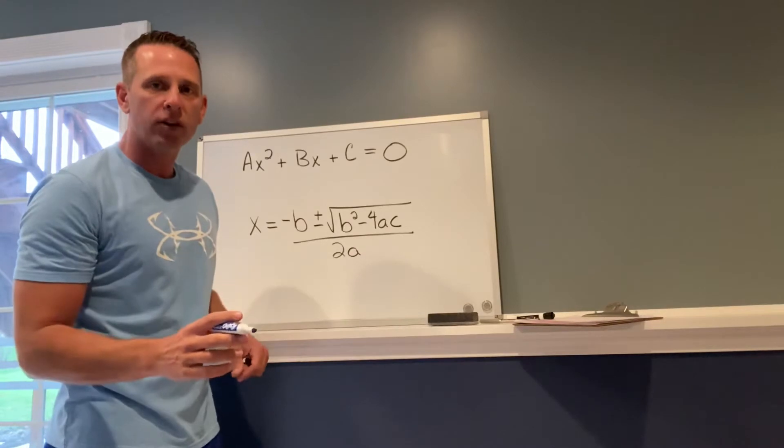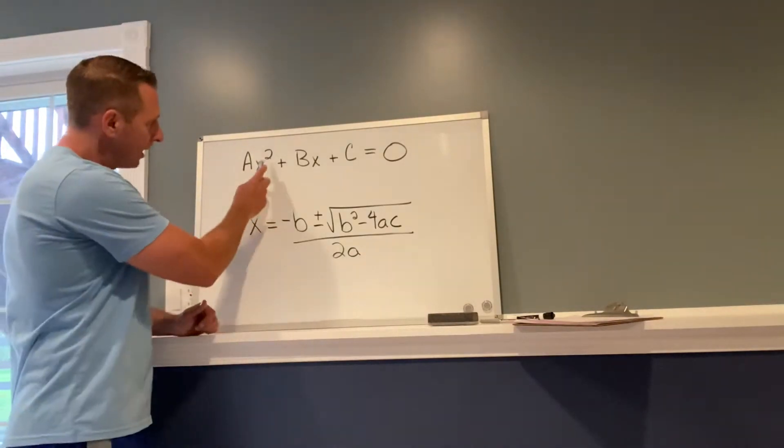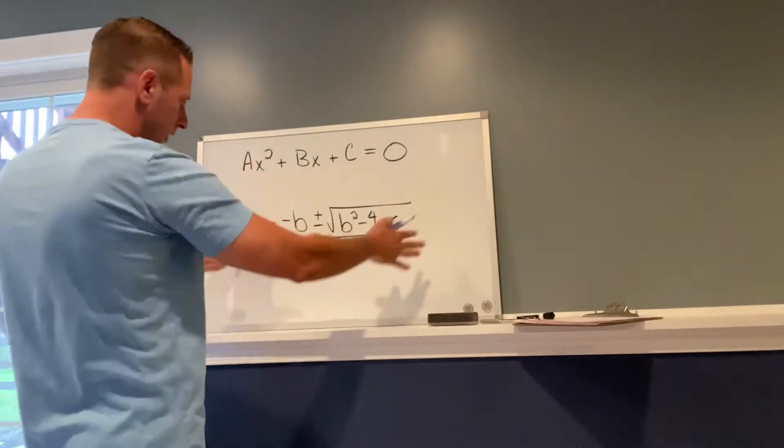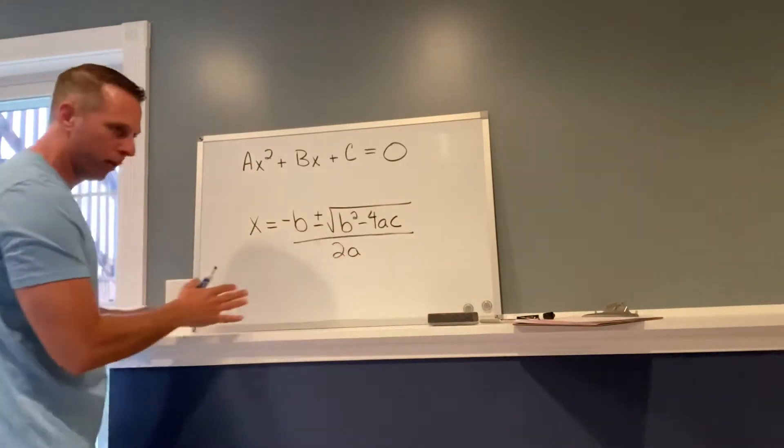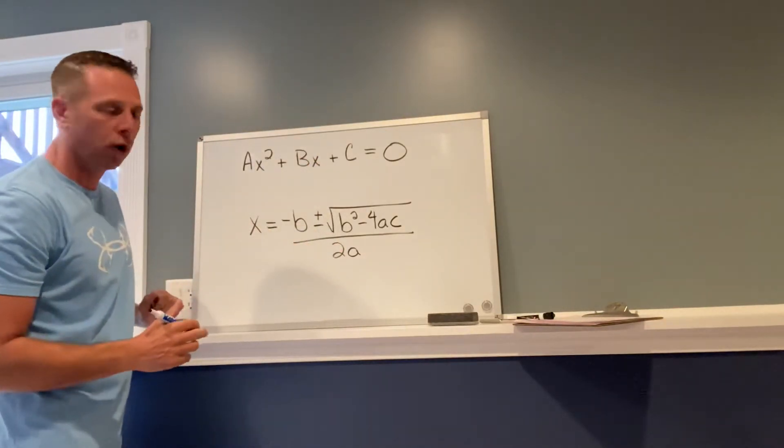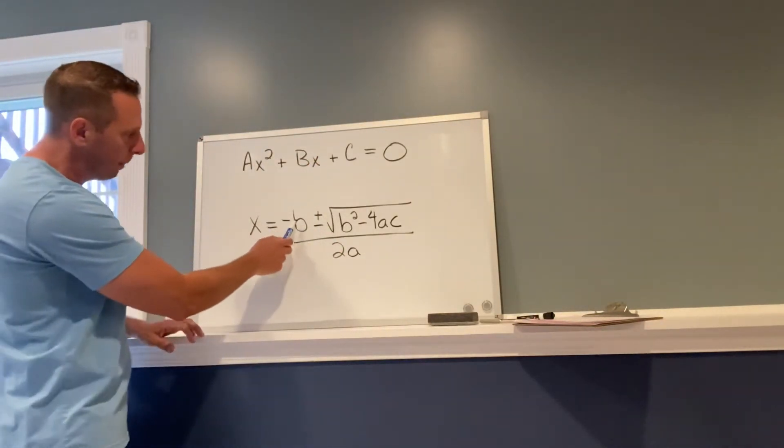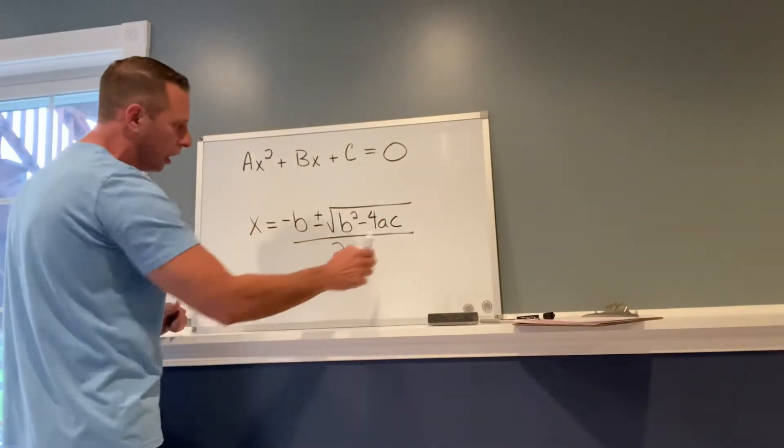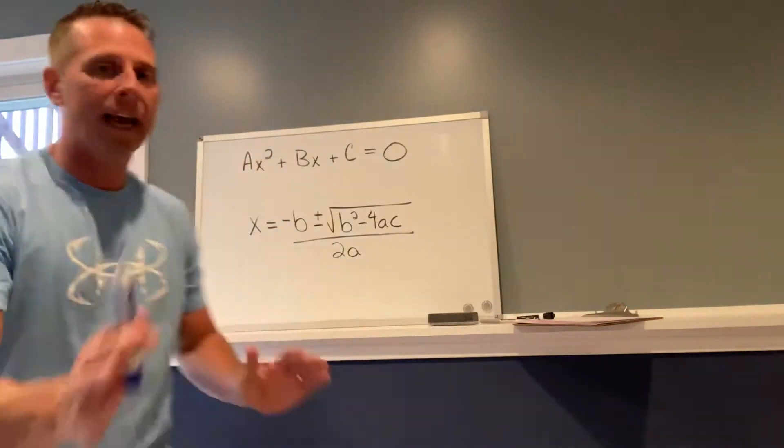All right, here we go. Hopefully you recognize this form right here is standard form of a quadratic equation: ax² + bx + c. Now this might look scary, this is the quadratic formula. We're gonna take these values and substitute into this formula: x equals negative b plus or minus square root b² minus 4ac all over 2a. Don't shut off the video, it's not that bad.